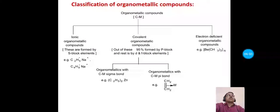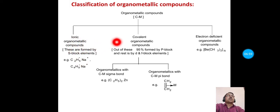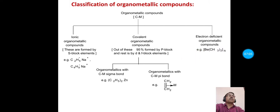Broadly, organometallic compounds are classified into three groups: ionic organometallic compounds, covalent organometallic compounds, and electron-deficient organometallic compounds.